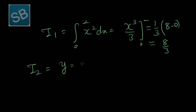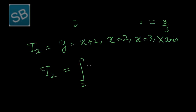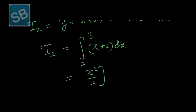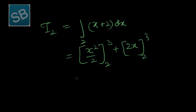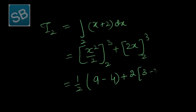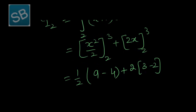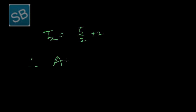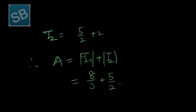I2 is covered by y equals x plus 2 from x equals 2 to x equals 3. Therefore I2 equals the integral from 2 to 3 of x plus 2 dx, which gives x squared over 2 plus 2x evaluated from 2 to 3. That is one-half times 9 minus 4 plus 2 times 3 minus 2, giving 5 over 2 plus 2.